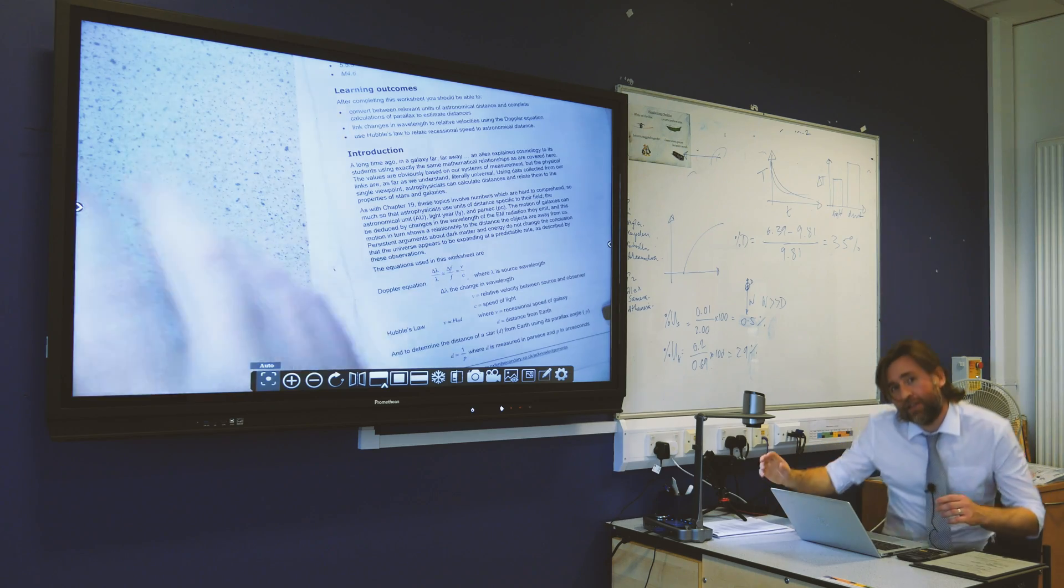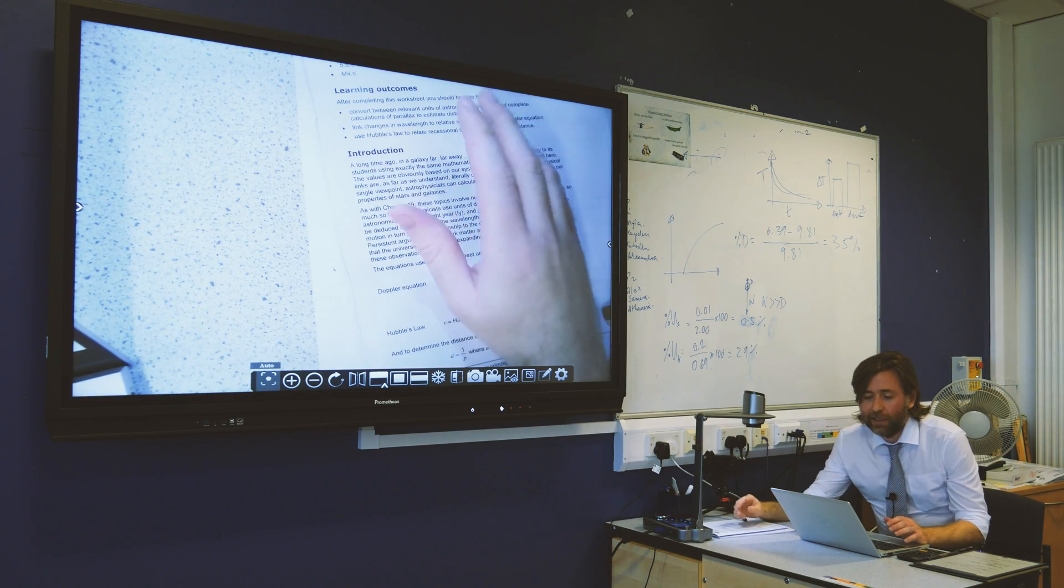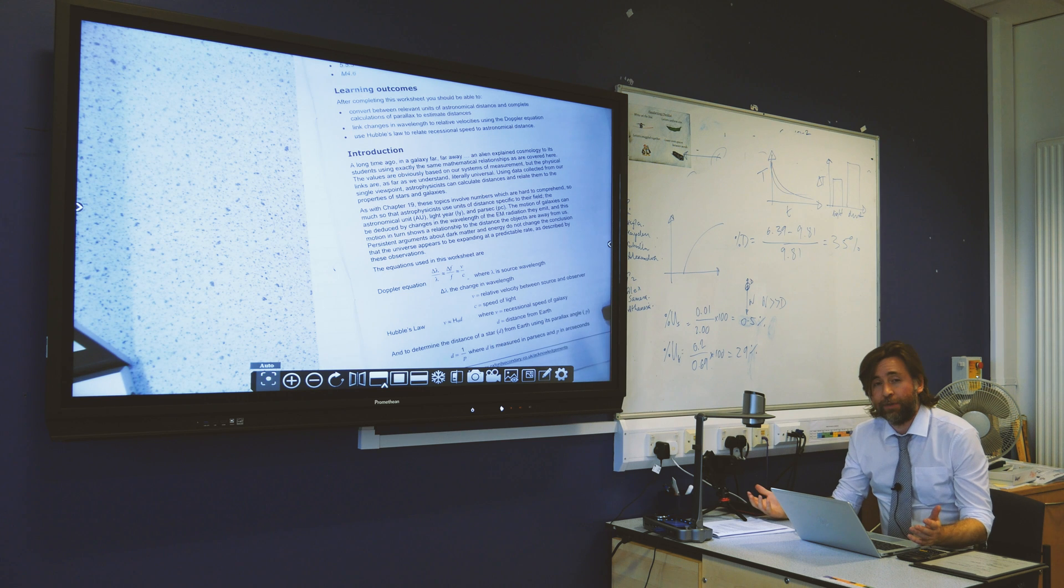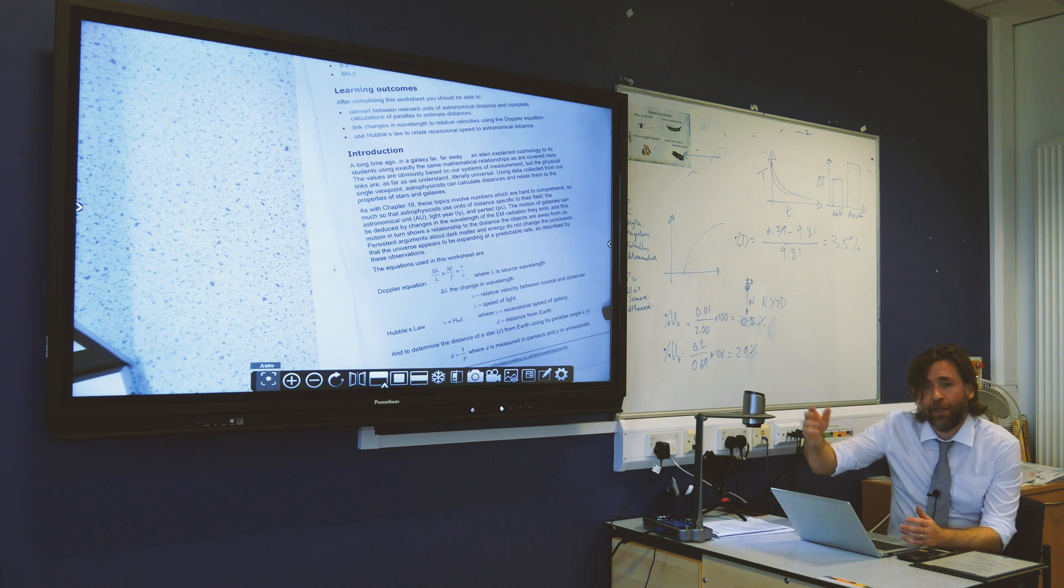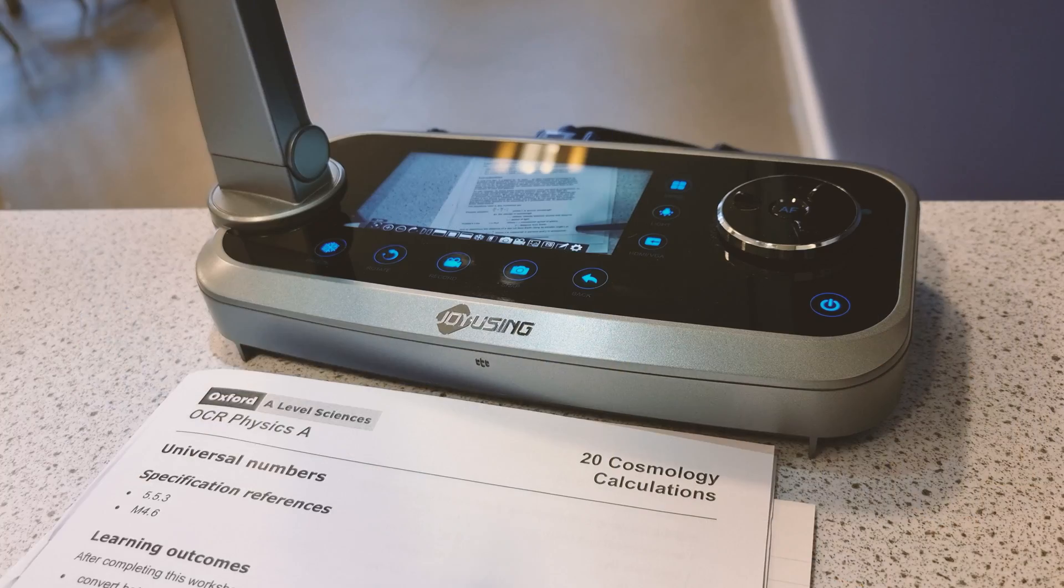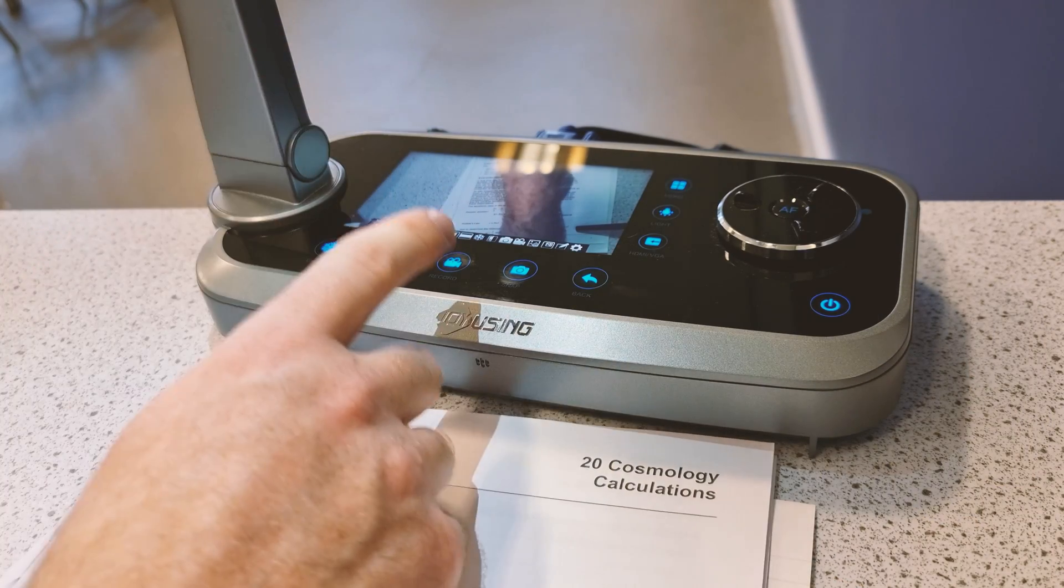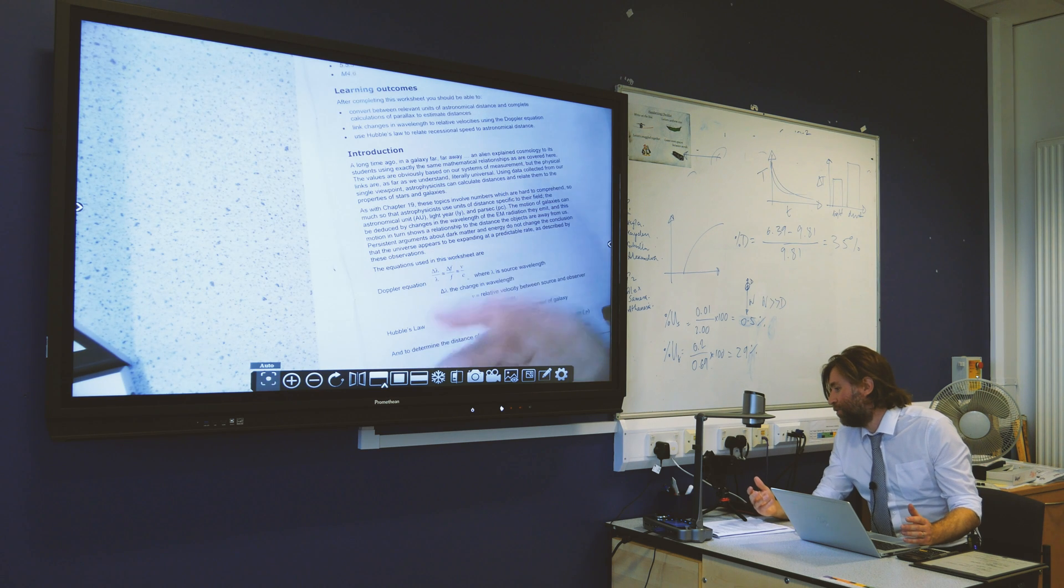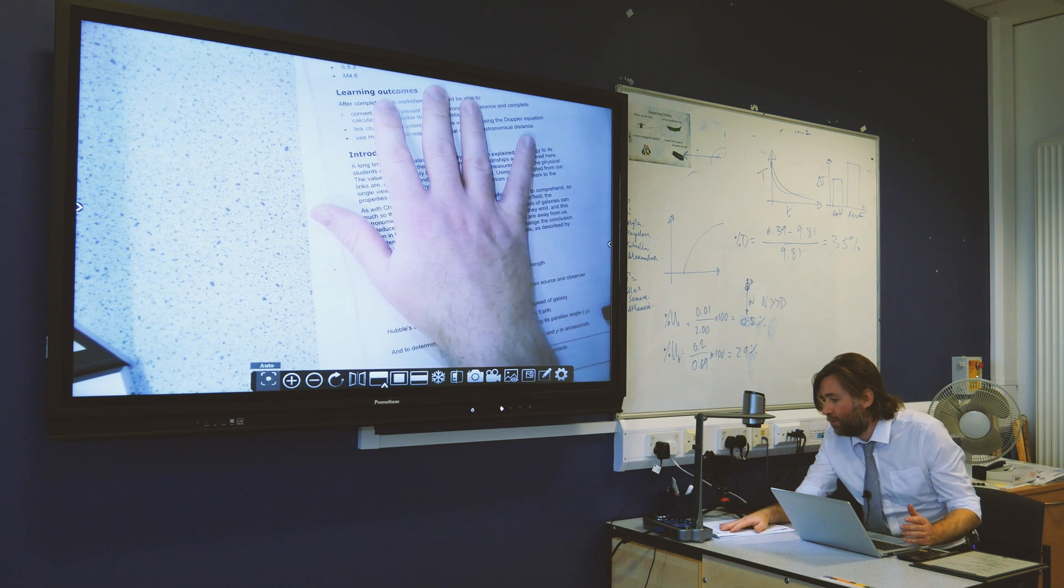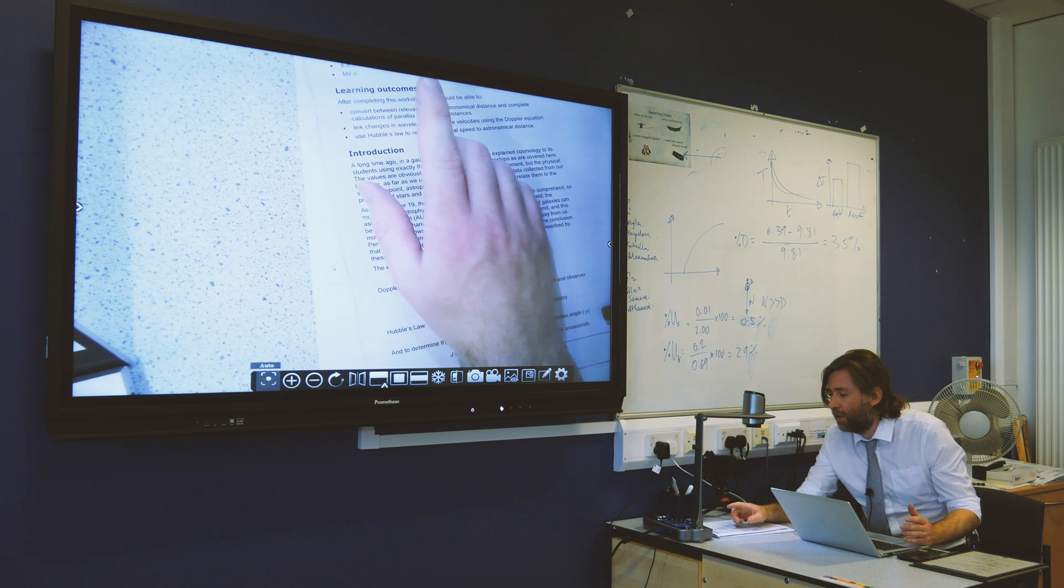This is the Joyusing V1X and it solves one of the biggest problems with visualizers, and that problem is having to look over your shoulder whilst you're presenting to a class. You see, the V1X has this screen on the actual visualizer body, and that's perfect for just glancing up to know exactly what your class is looking at.